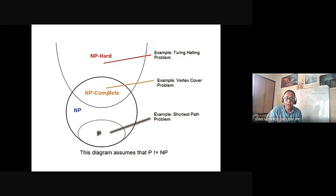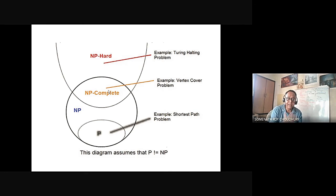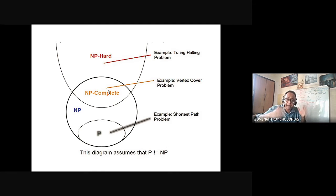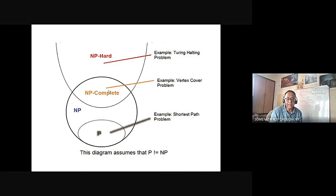Another example of an NP complete problem is 3SAT; another is the factorization problem — a big number is given and you have to factor it. As in the Sipser examples, 13 × 7 = 91, but whenever you are given 91, it is very difficult to find the factors. A computer can do it in a microsecond for small numbers, but if you give a big number — say a 309-digit number — even a computer cannot find the factors. It is very difficult to find.